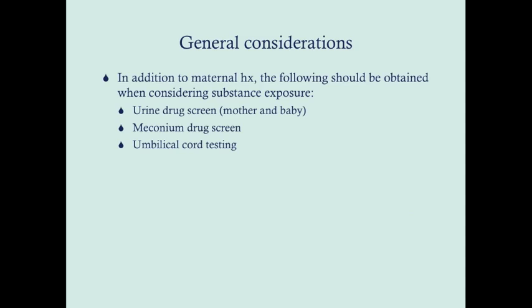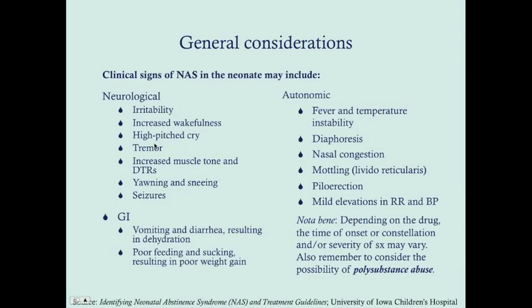In addition to maternal history, obtain a urine drug screen if you suspect substance abuse — both from the baby and from the mother. You should also get a meconium drug screen, which tends to be more accurate than a urine drug screen, as well as umbilical cord testing.